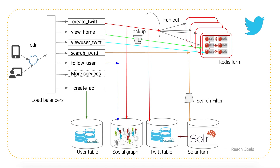What you see on the screen is an architectural diagram, or system design diagram, for Twitter. Here we have computers and phones accessing load balancers through a CDN, and you have multiple services like create tweet, tweet view, user tweet, search tweet, follow users, and create account. All these services can be set up in Docker and deployed in multiple instances with auto-scaling or pre-scaling based on necessity.